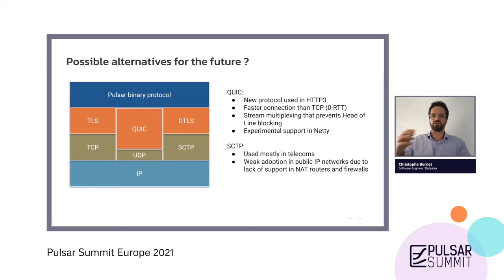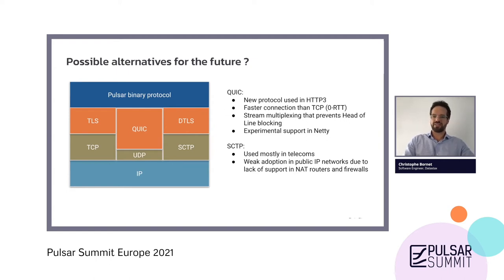QUIC is experimental in that it's a very recent protocol. When it becomes GA, it could be a good idea to check if it could replace and have an interest for the Pulsar protocol. The other one we can talk about briefly is SCTP, which is mostly used in telecoms. It has weaker adoption in public IP networks because hardware, NAT routers, and firewalls only have support for TCP and UDP and will generally block SCTP. So maybe not a good addition for Pulsar at the moment.